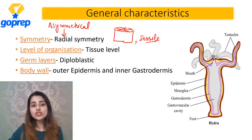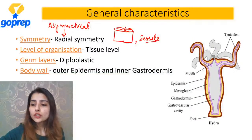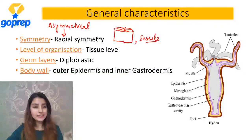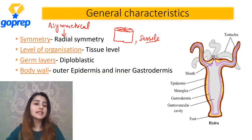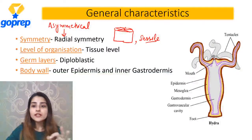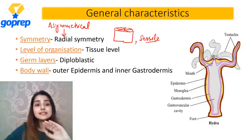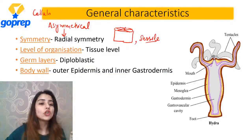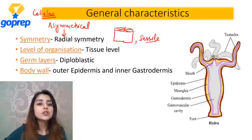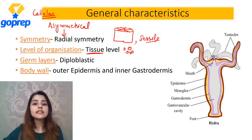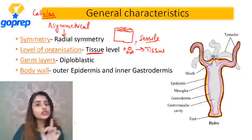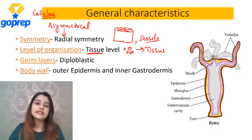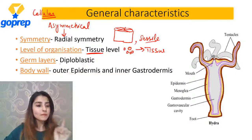Next is grade of organization - batao mujhe Porifera ka grade of organization kya tha? Porifera mein what was the level? Cellular level of organization. Ab hum Coelenterata mein advanced ho gaye hain - yahaan par kaun sa level? Tissue level. Matlab cells ne group bana liye hain - un groups ko hum tissue bolte hain. But these tissues are not forming any organ - sirf tissue ban raha hai, aur tissues mein division of labor hai.